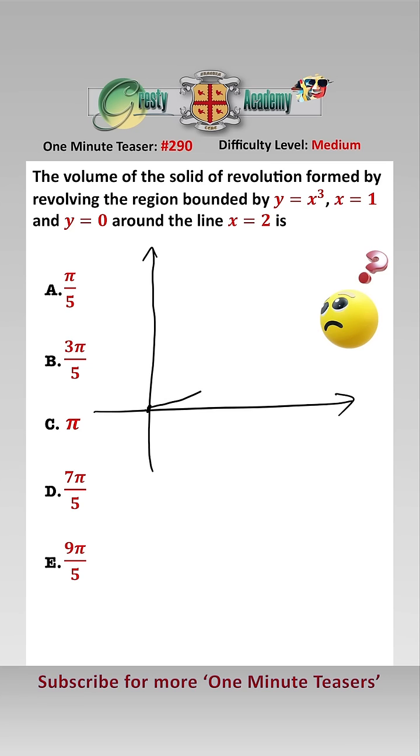We have y equals x cubed, like that. We have the line x equals 1, like that. We have the line y equals 0, and so therefore this is the region that we are going to be revolving, and here is the line x equals 2. So we're going to be revolving this region around this line here.